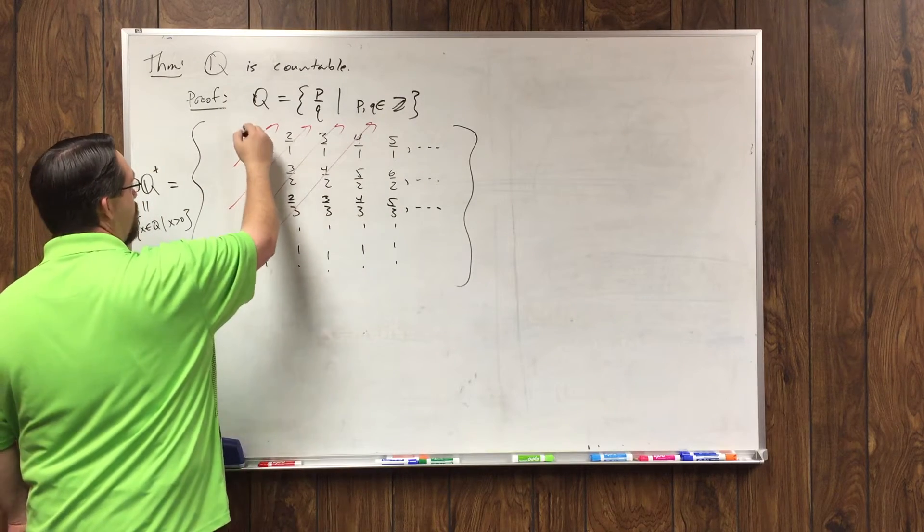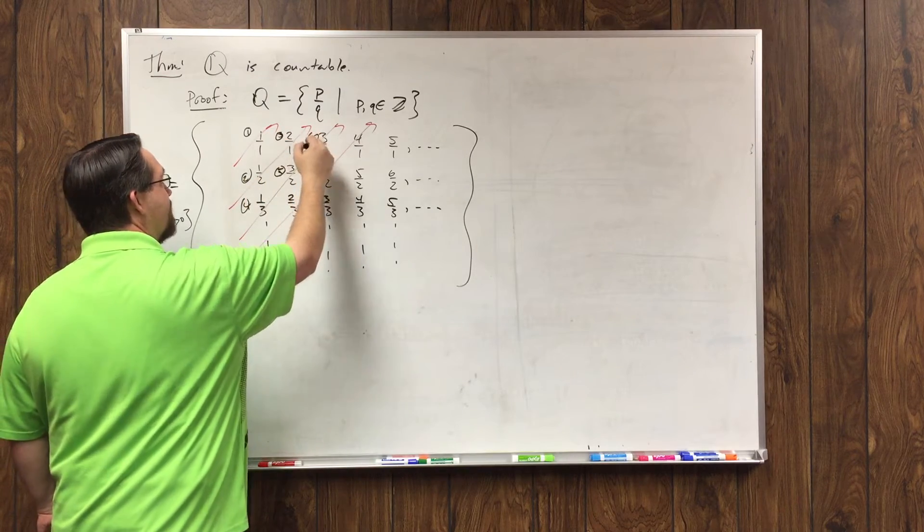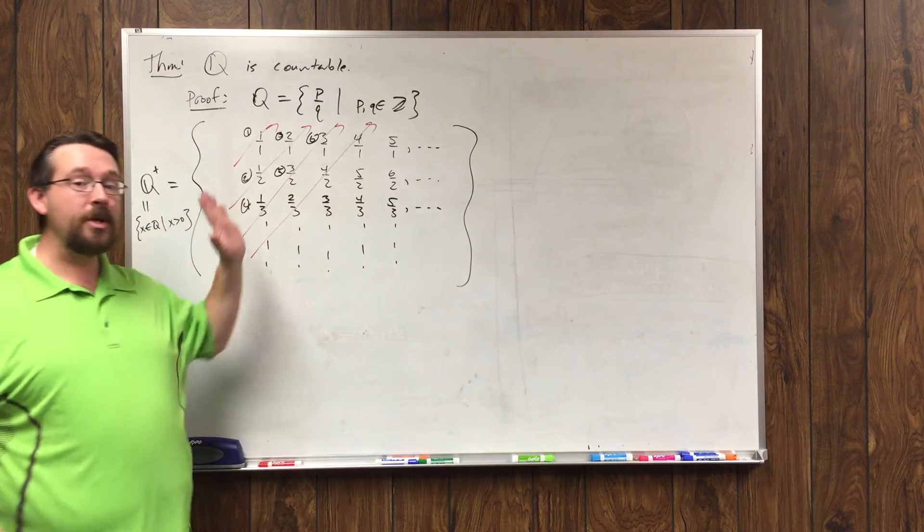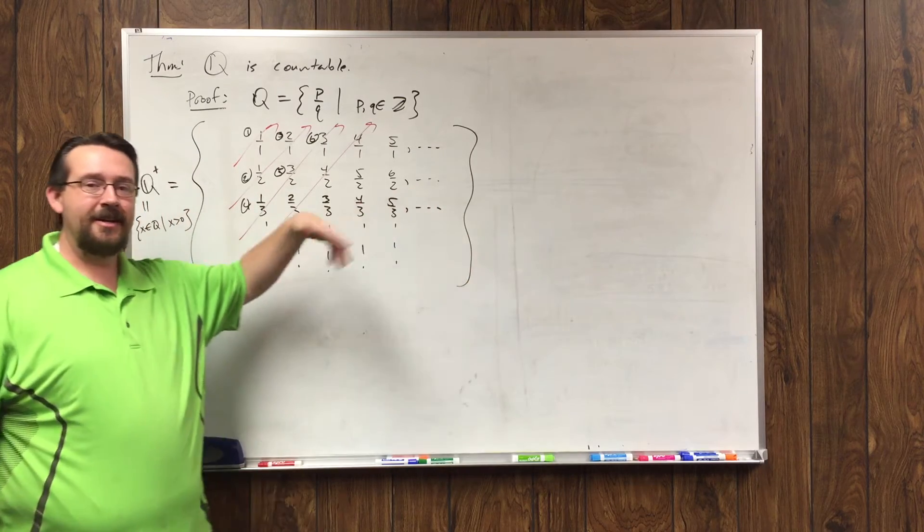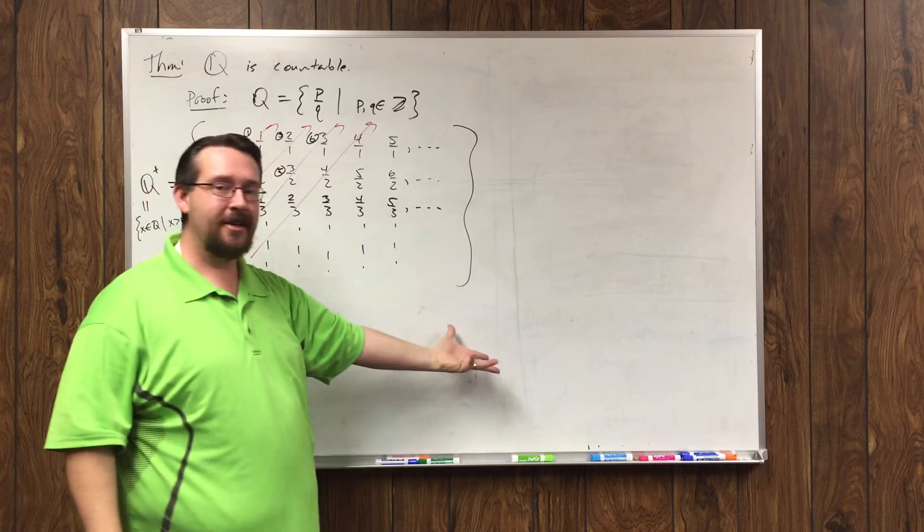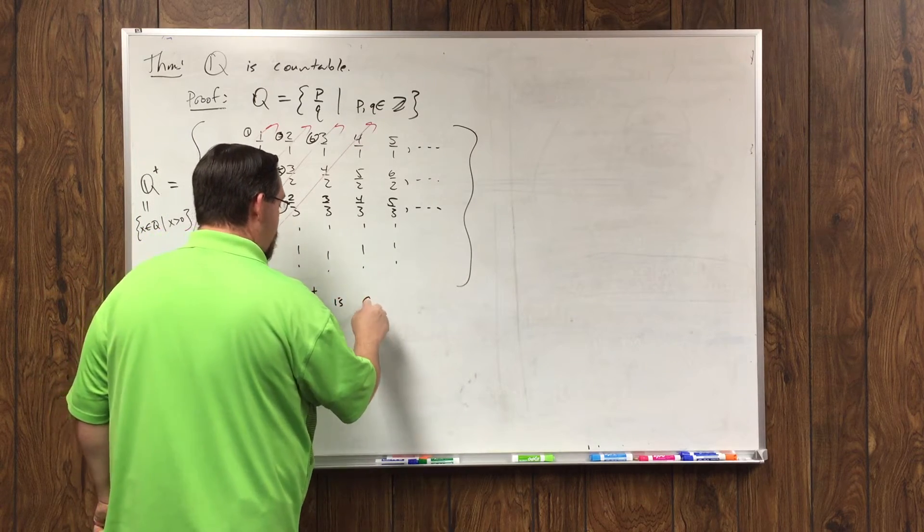Now, how do I start enumerating these? How do I start listing them? Well, I'll do the same diagonalization procedure that I did with the Cartesian product of the natural numbers. Here's my first one, second, third, fourth, fifth, sixth, and so on. And as a result, this will eventually hit every element in the set, so it lists or enumerates that, which means Q+ is countable.